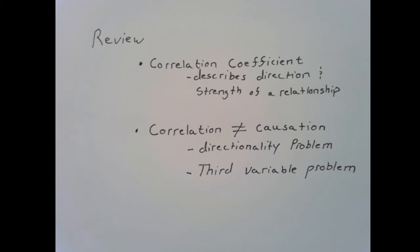And then, and this is really the big one, the third variable problem. You cannot rule out that there is some other factor that accounts for the relationship between these two variables. There is some third variable that causes them both, such that when it's present, those other two variables tend to be present as well.